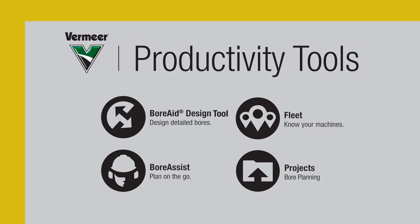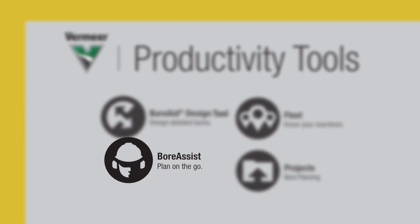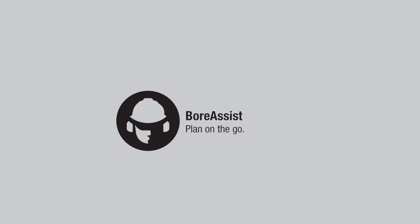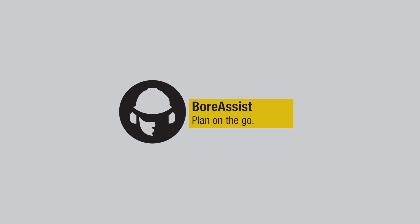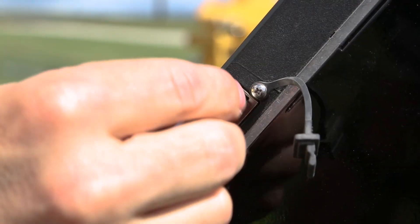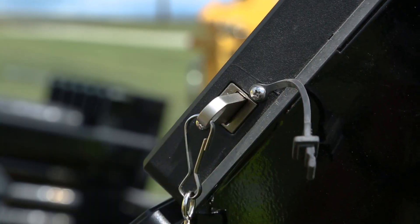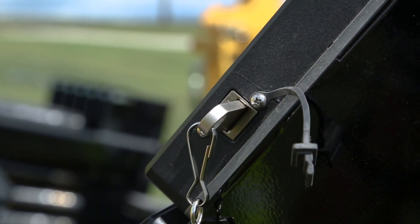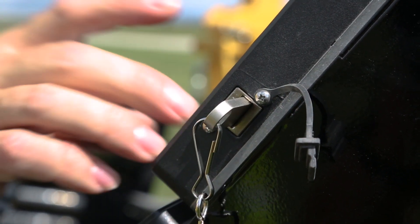The Vermeer Productivity Tools are a set of applications to help utility contractors plan, map, and manage projects. One of these tools, Bore Assist, allows you to create a bore path from scratch on a DCI Digitrack Aurora display, or take a USB flash drive and put a pre-developed project plan into the system.